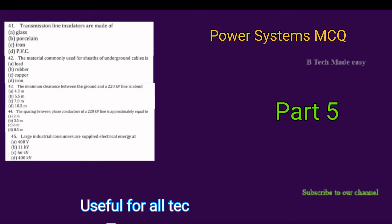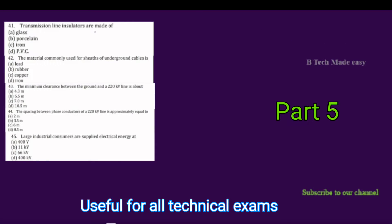In the fifth part, the first question comes from transmission lines and insulators. In transmission lines, we have one type of insulators — suspension type, shackle type, pin type, and other types of insulators.